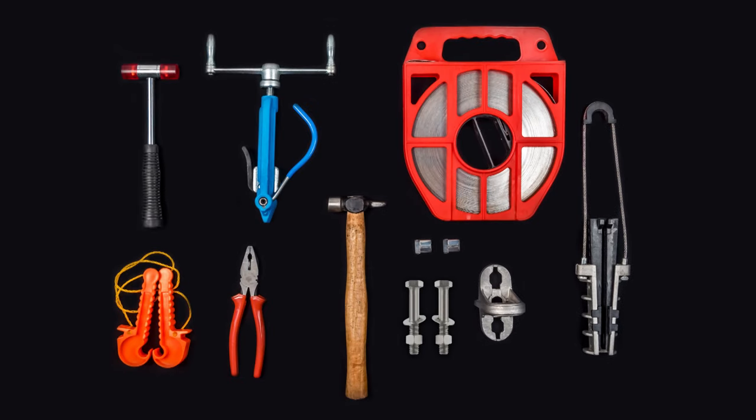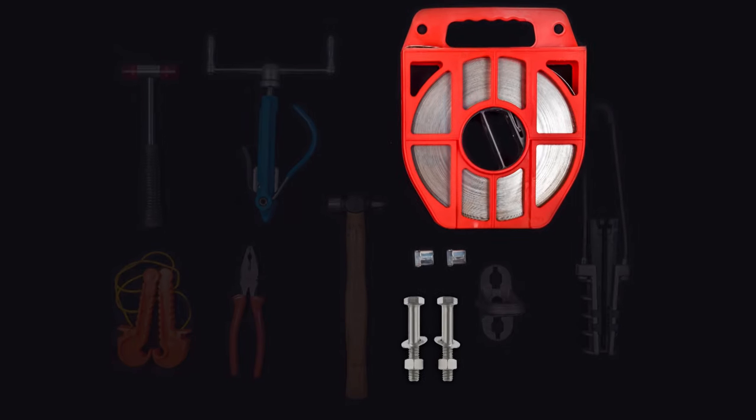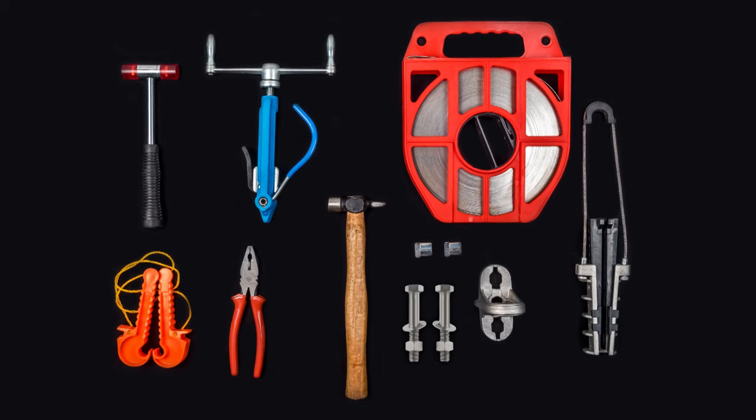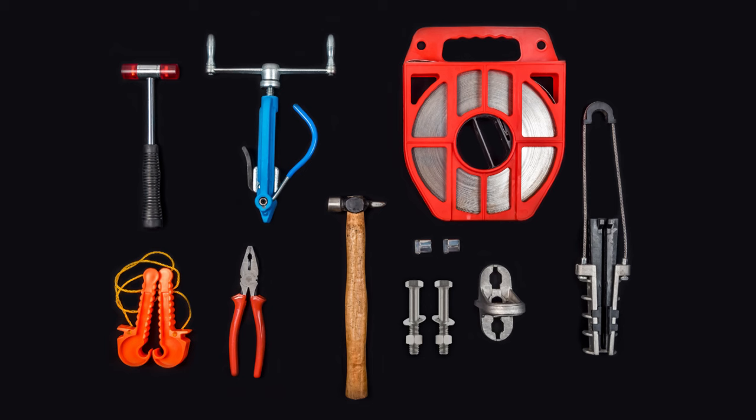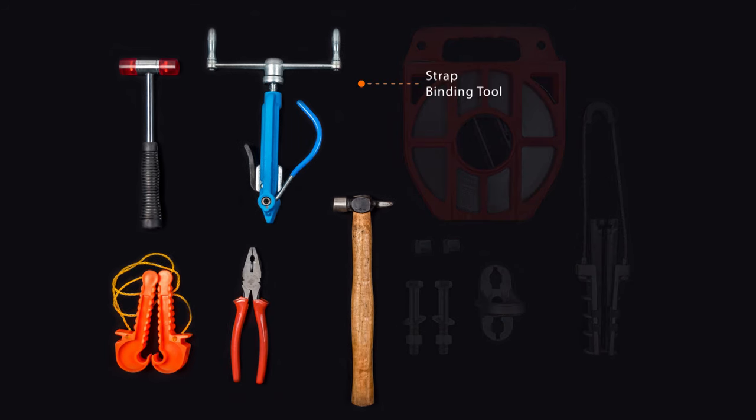The accessories required to mount this assembly on a pole are straps and buckles, bolts and nuts. The various tools required during installation are strap binding tool, hammer, and face separator.